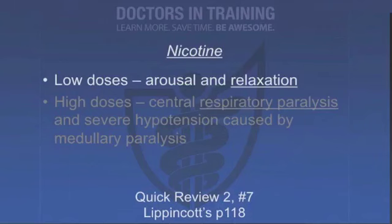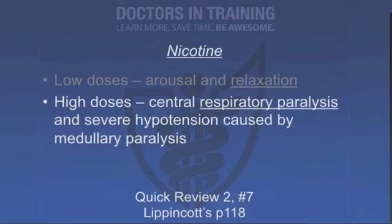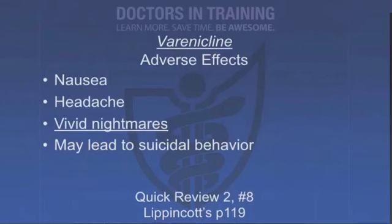Describe the effects of nicotine on the CNS at high and low doses. At low doses, you get arousal and relaxation. At high doses, you get central respiratory paralysis and severe hypotension by medullary paralysis. Nicotine poisoning by smoking is nearly impossible; liquid nicotine spilled on skin is the real risk. Adverse effects of varenicline include nausea, headache, vivid nightmares, and suicidal behavior — don't give this to uncontrolled depressed patients, and always warn patients that if they feel bad, it could be the medication.